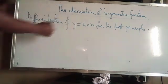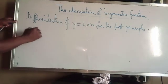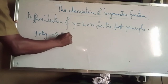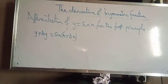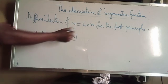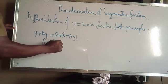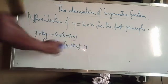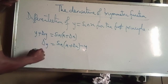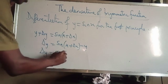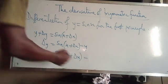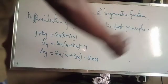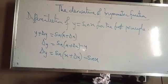How do we go about that? As usual, we have delta y and delta x. So y plus delta y is equal to sine of x plus delta x. By doing that, we make delta y the subject, so delta y equals sine of x plus delta x minus y, which gives us: delta y equals sine of x plus delta x minus sine x.